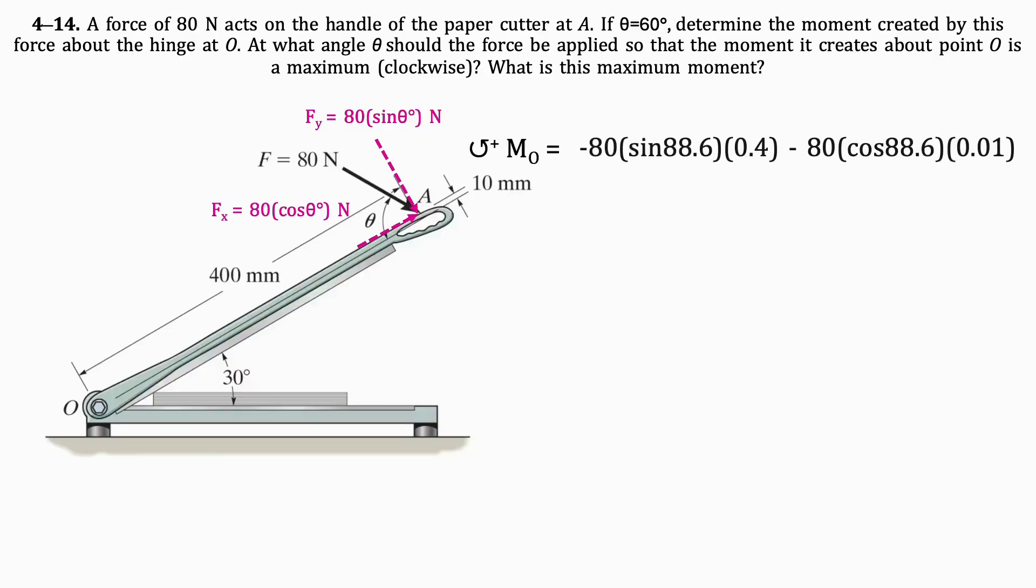Using the equation we previously defined and substituting theta for 88.6 degrees, we get that the maximum moment about O is 32.2 newton meters in the clockwise direction.